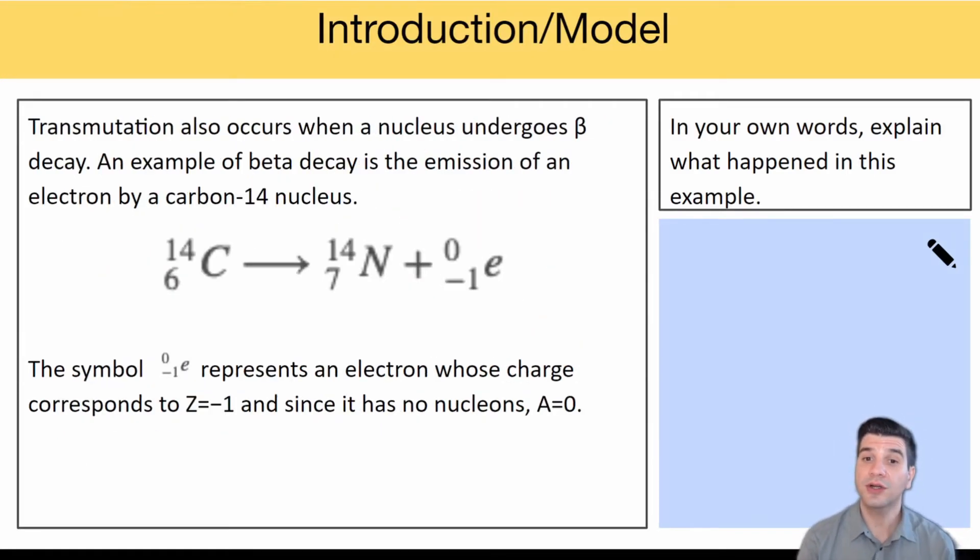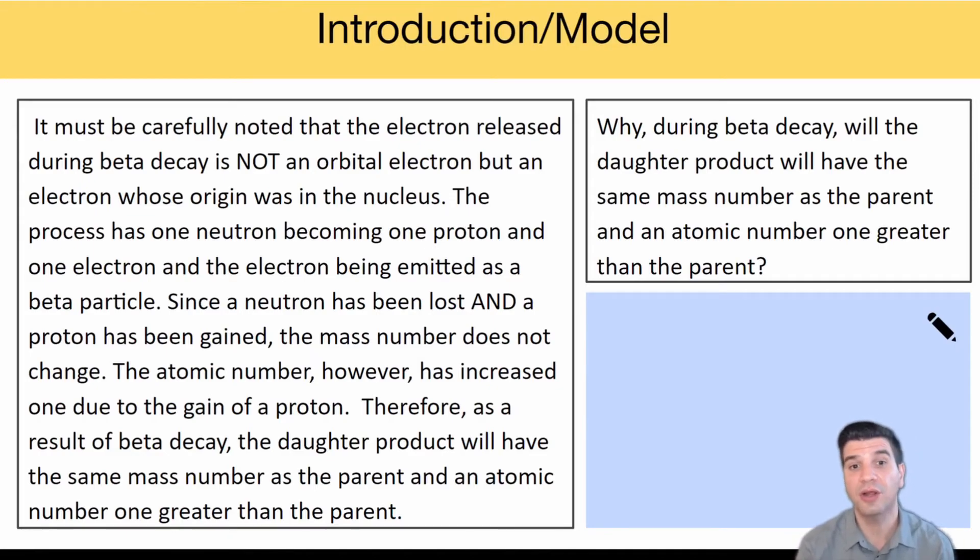Transmutation can also occur with beta decay. One example is the emission of an electron by carbon-14. You've got carbon-14 and the decay products are nitrogen-14 and your electron. It's very important to note that the electron released during beta decay was not actually an orbital electron. It actually originated within that nucleus. The process has one neutron becoming one proton and one electron, and the electron being emitted as a beta particle.